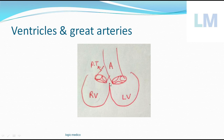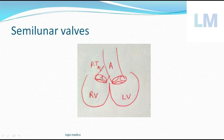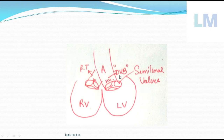These semilunar valves are present at the junction between the ventricles and the great blood vessels - right ventricle and left ventricle connecting to the pulmonary trunk and ascending aorta respectively. They are called semilunar because each valve is shaped like a half moon. The closure of these semilunar valves produces one sound called 'dub'.